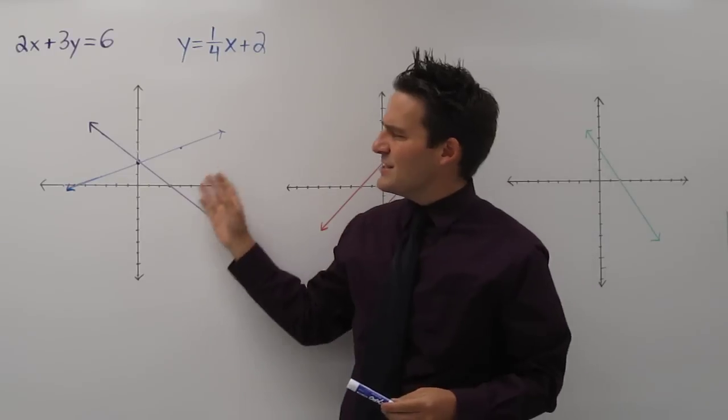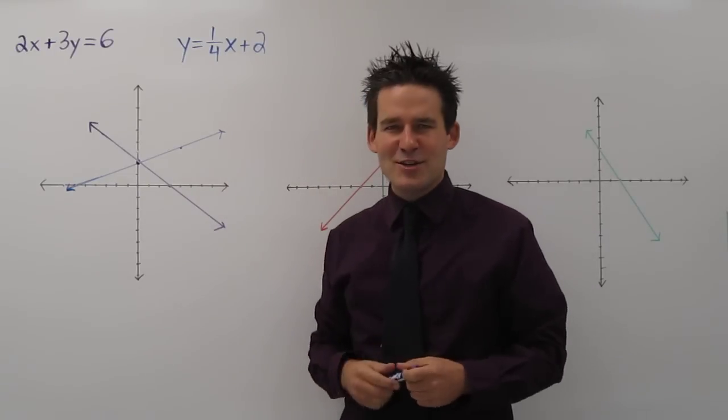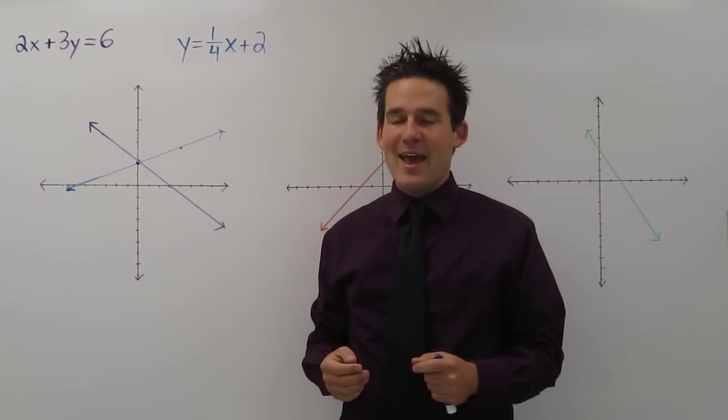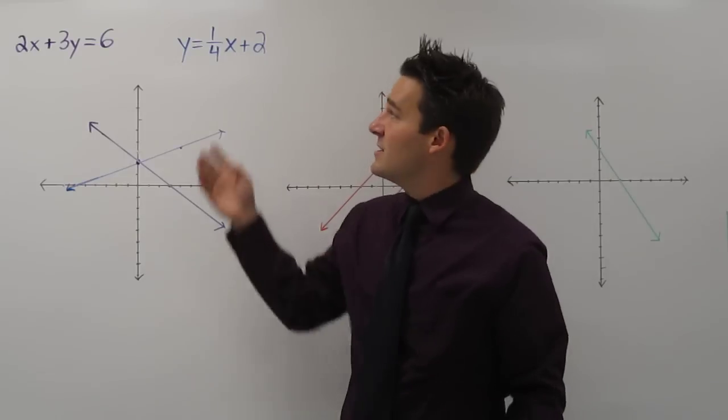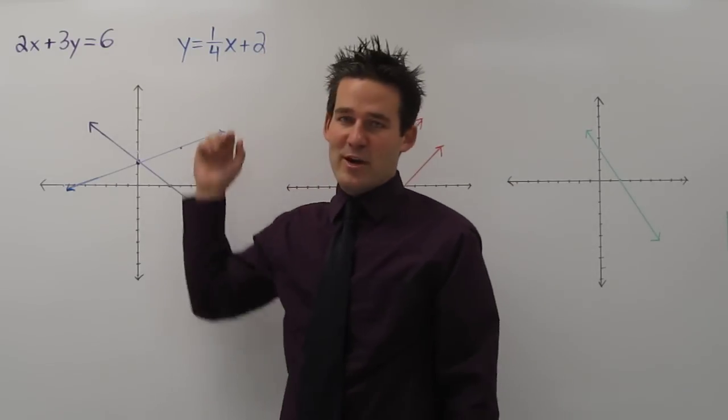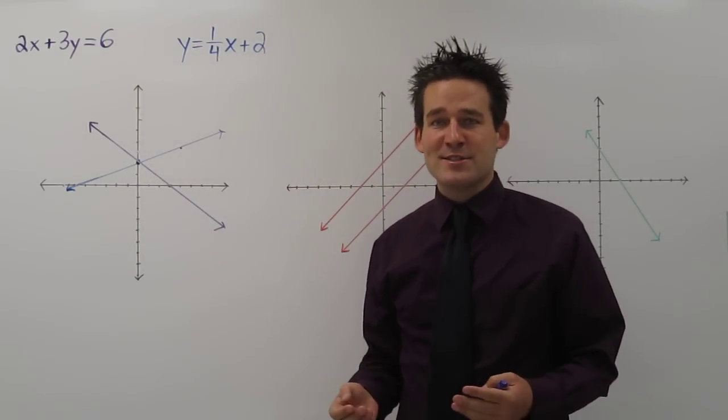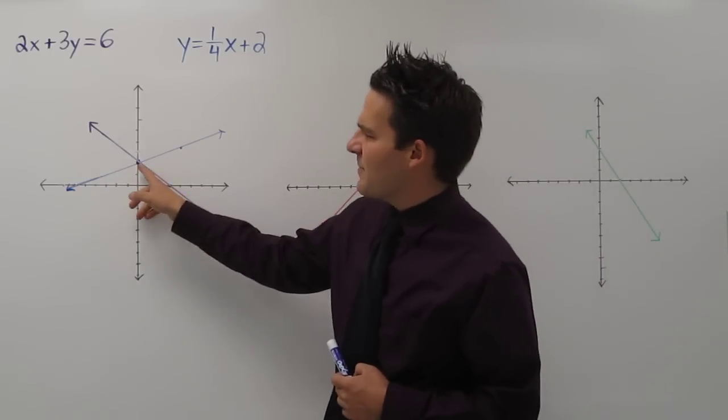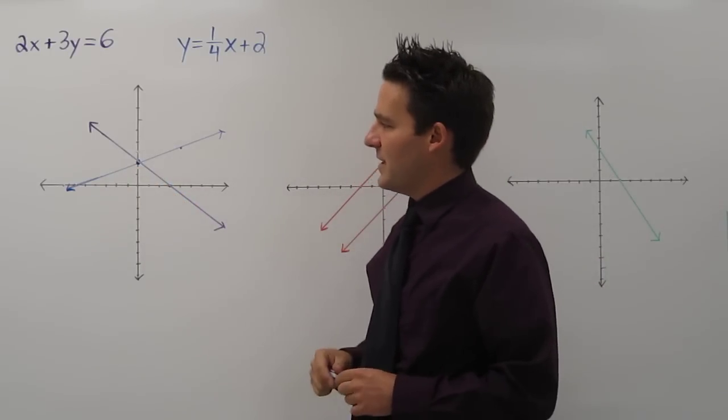Now we can see that these two linear equations intersect at one point. And that's called a solution to this system of equations. A system of equations describes several equations. So let's talk about what this actual intersection means.